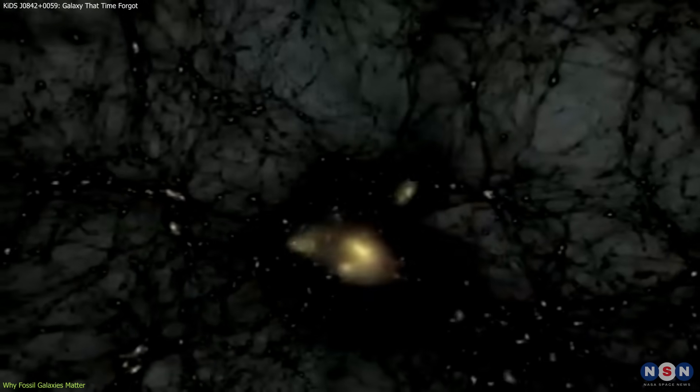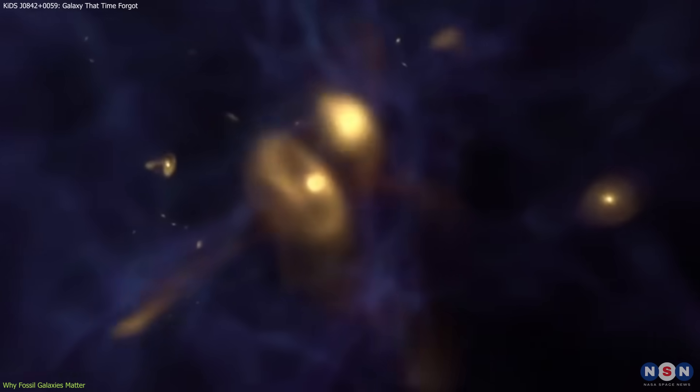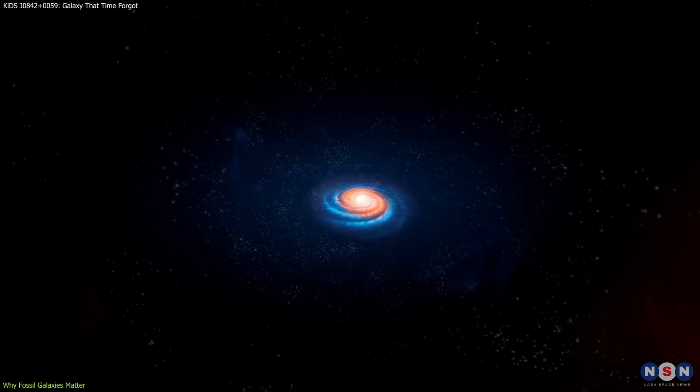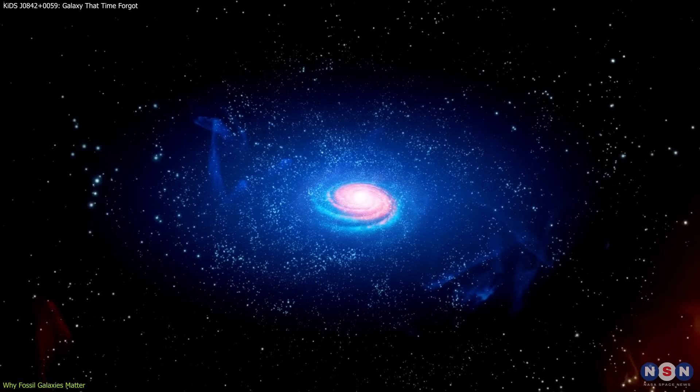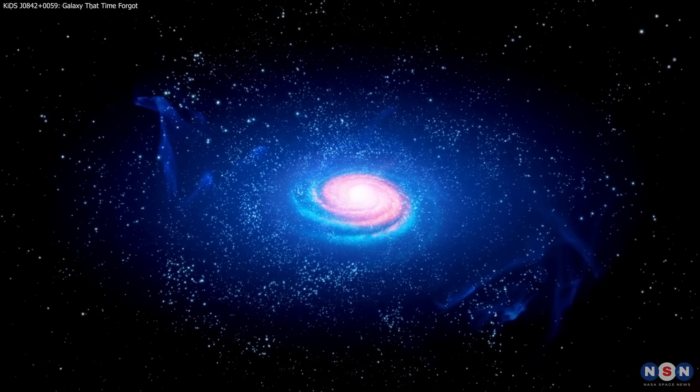They also help in understanding dark matter. In typical galaxies, interactions and mergers can redistribute dark matter and affect how it's observed. In a fossil galaxy, the dark matter halo is likely still in its original state, making it easier to study its shape and influence.